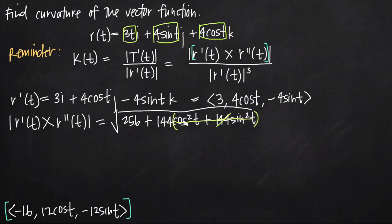Now we can find the curvature kappa. k(t) equals the numerator 20 divided by the denominator 5 cubed. 5 cubed is 125, so we get 20 over 125. Simplifying by dividing both by 5 gives us 4 over 25. We can't simplify any further, so the curvature is 4/25. That's how you find the curvature of a vector function.